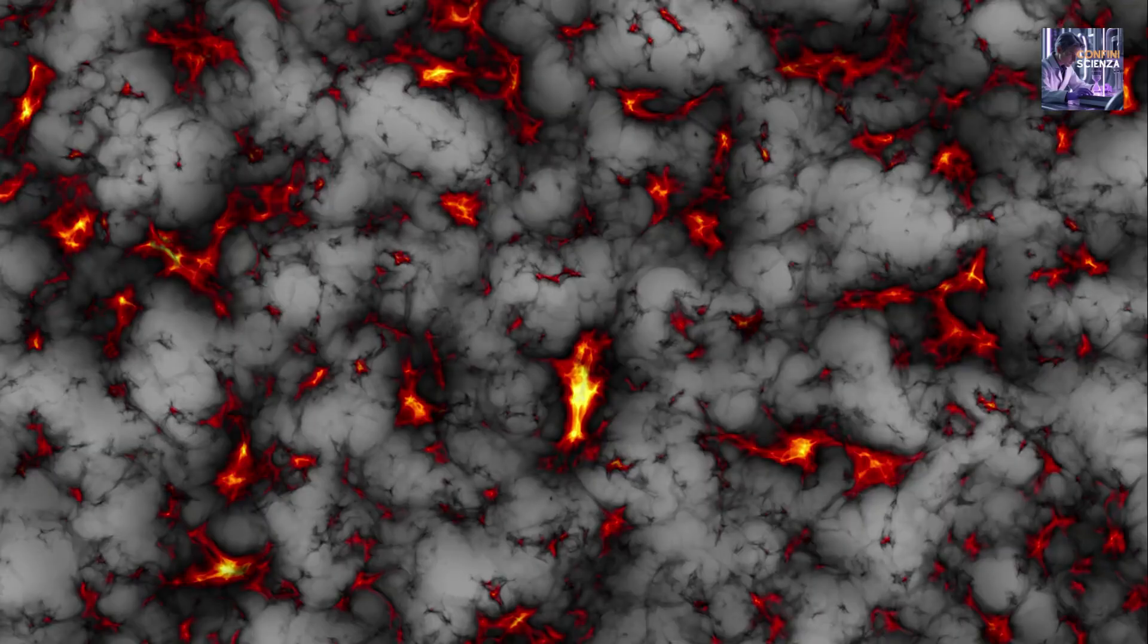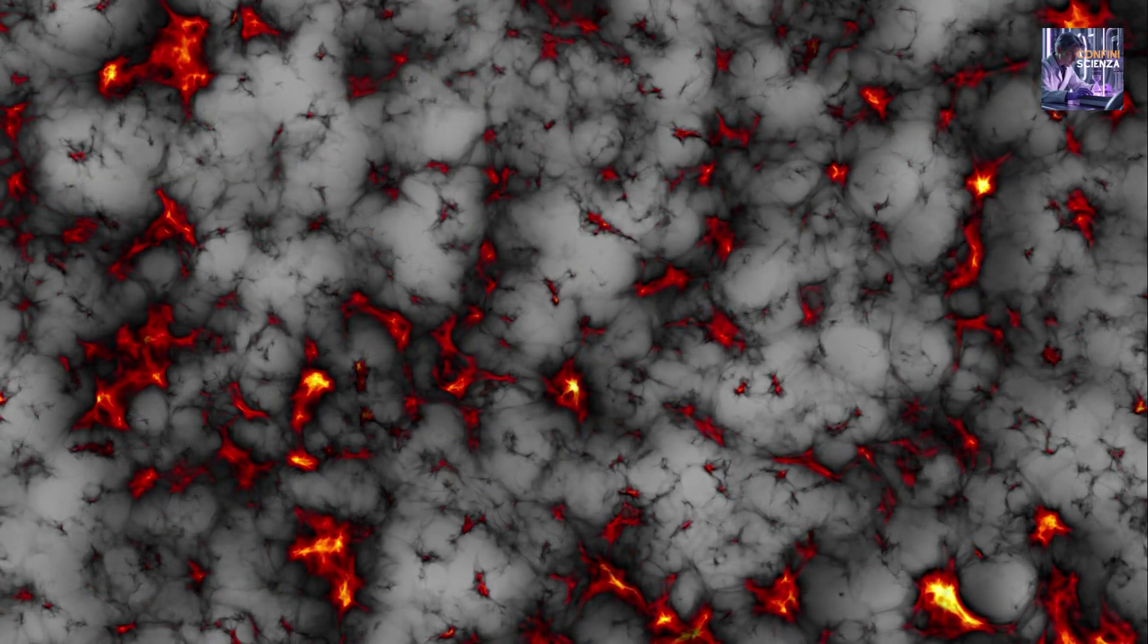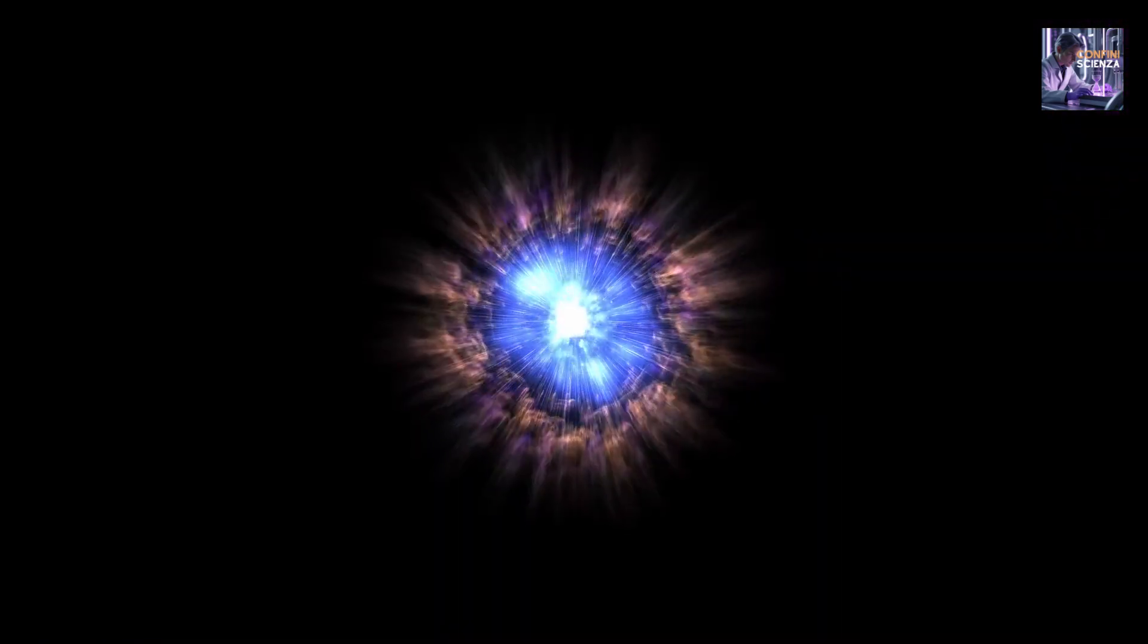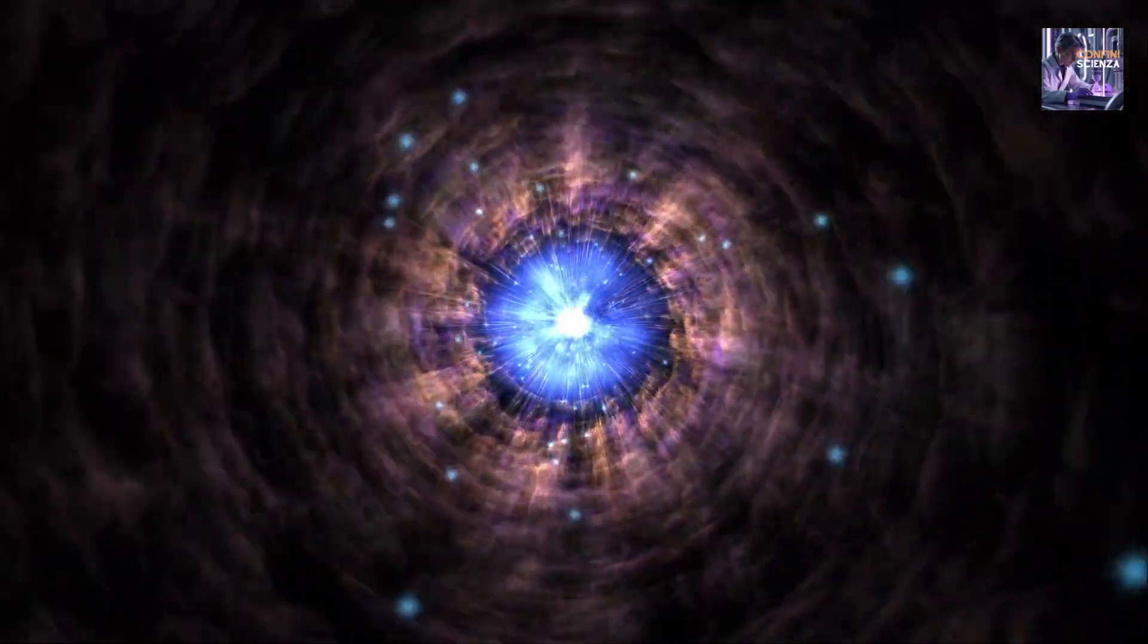Another cosmic mystery potentially linked to the vacuum is that of dark energy. Observation tells us that the expansion of the universe is accelerating, and dark energy is the name we give to this mysterious force that acts against gravity. A natural candidate for dark energy is precisely the energy of the vacuum, the cosmological constant. If the energy of the vacuum had a constant density in space-time, it would act as a repulsive force that pushes the universe to expand faster. However, theoretical calculations of vacuum energy are orders of magnitude higher than those observed experimentally. This is one of the biggest enigmas in modern physics and tells us that our understanding of the vacuum and gravity is not yet complete.